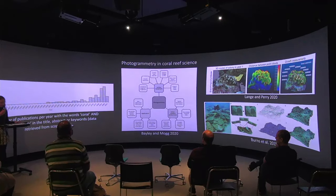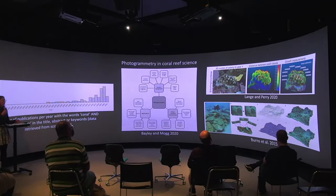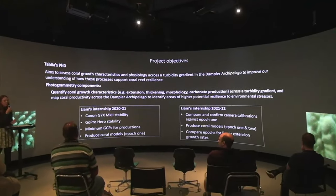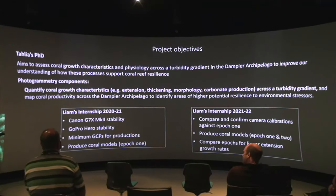The use of photogrammetry on coral reefs has increased markedly in recent years, with about 80% of all coral photogrammetry studies published since 2015. A wide range of metrics can be extracted from photogrammetry outputs, including growth rates, surface area, volume change, reef complexity or roughness — making this approach a really useful tool in the study of coral reefs at a range of spatial scales, from the individual colony scale all the way to the reef scale. My PhD aims to assess coral growth characteristics and physiology across the turbidity gradient in the Dampier Archipelago to improve our understanding of how these processes support coral reef resilience.